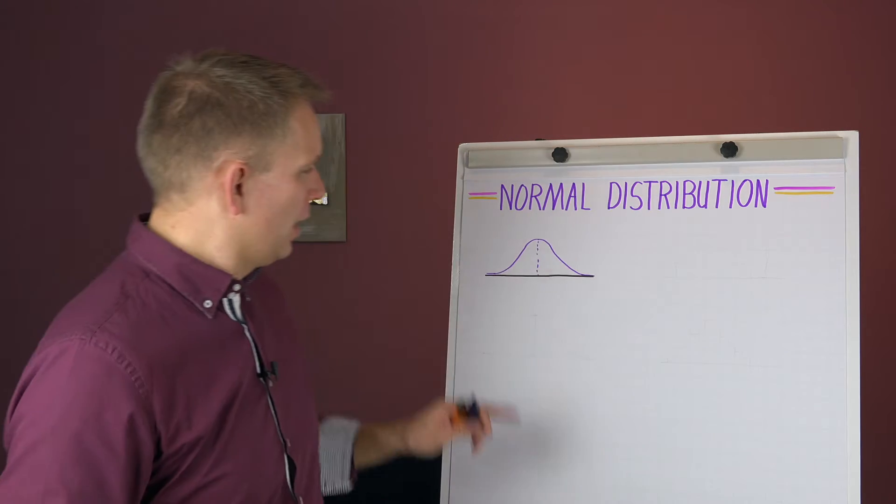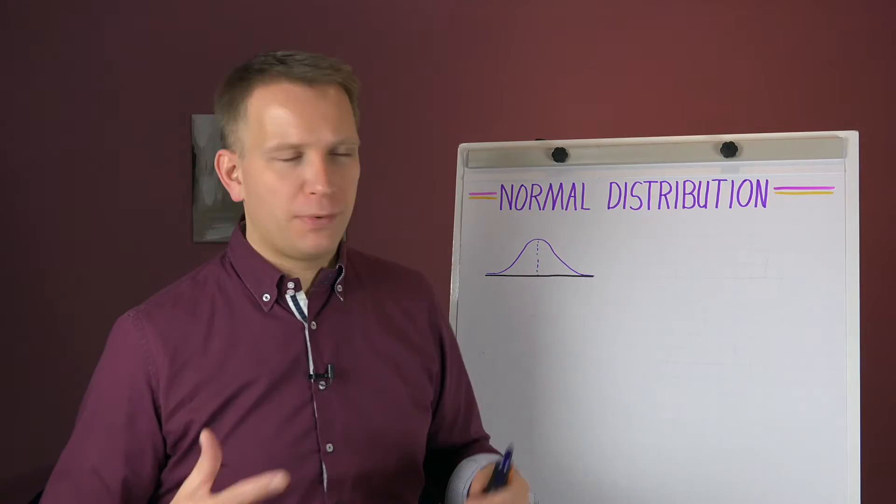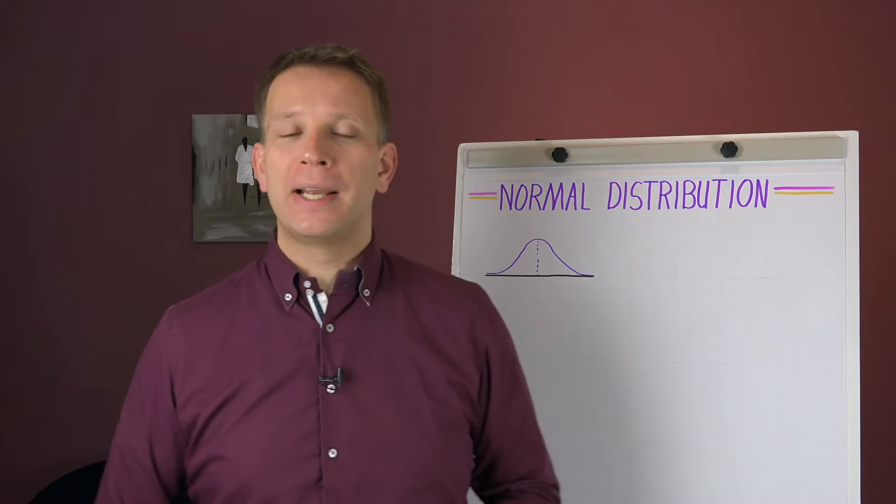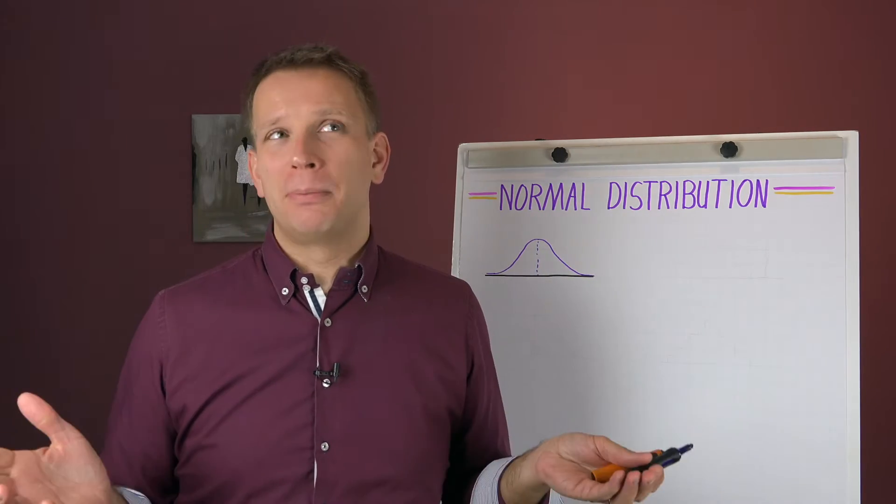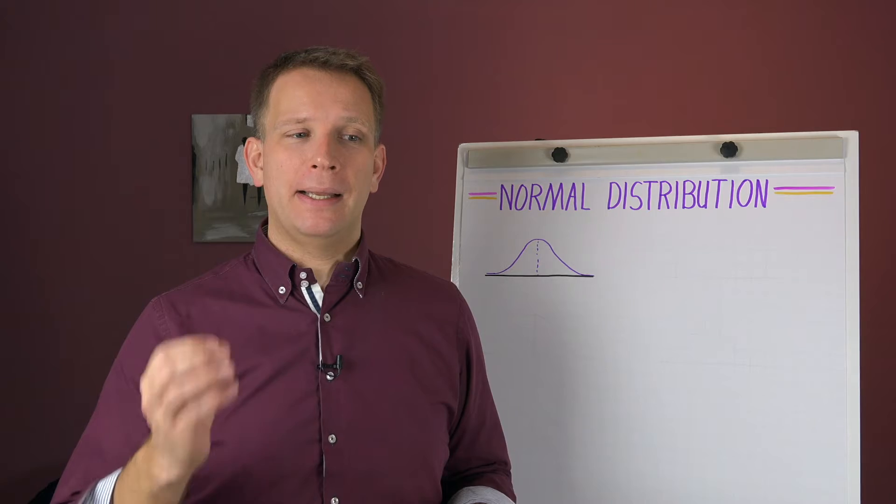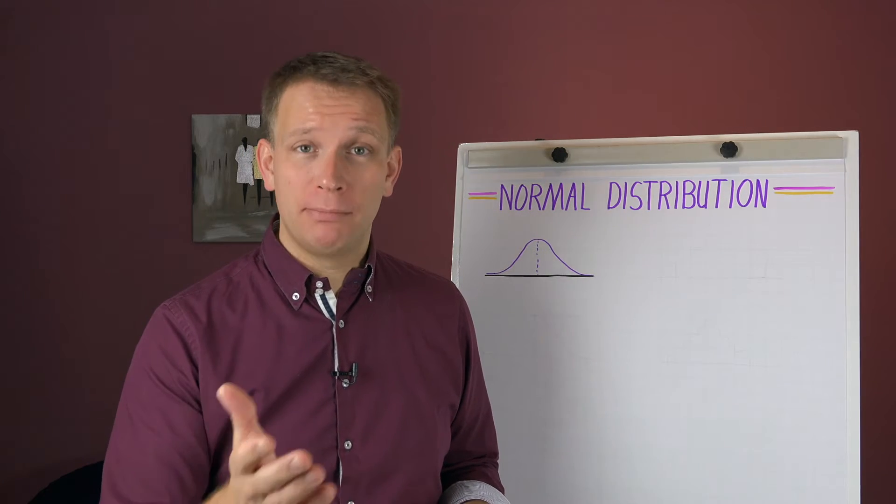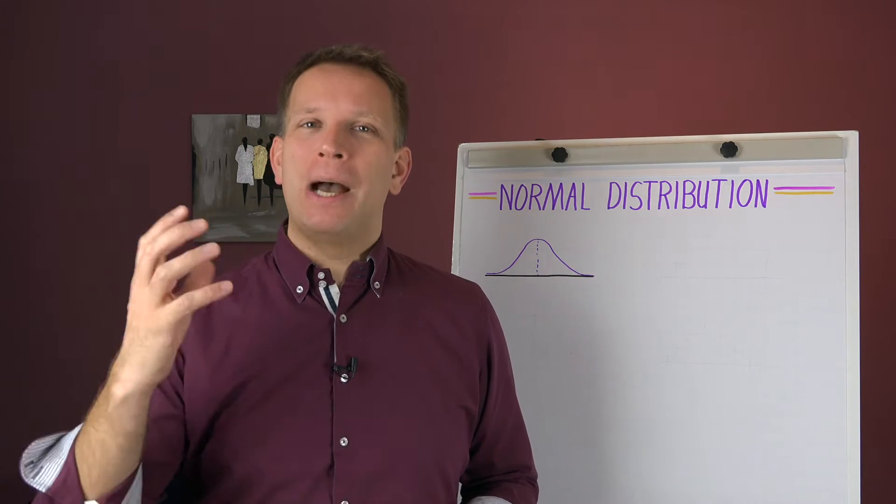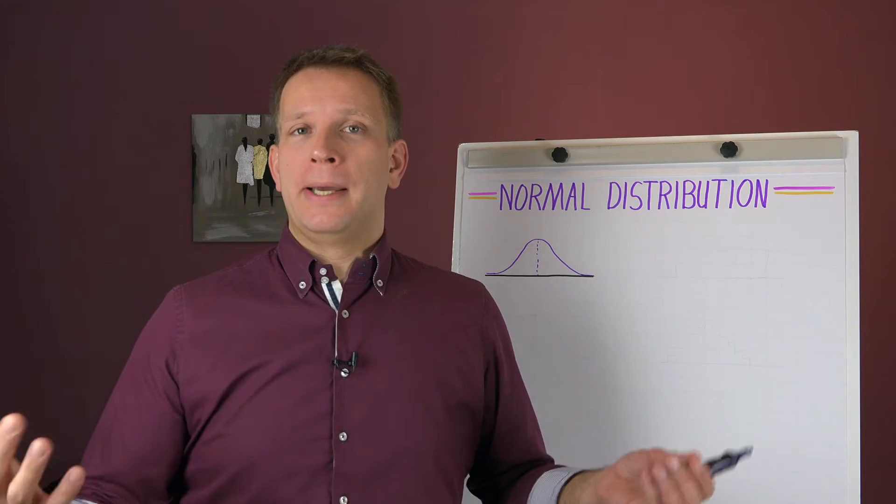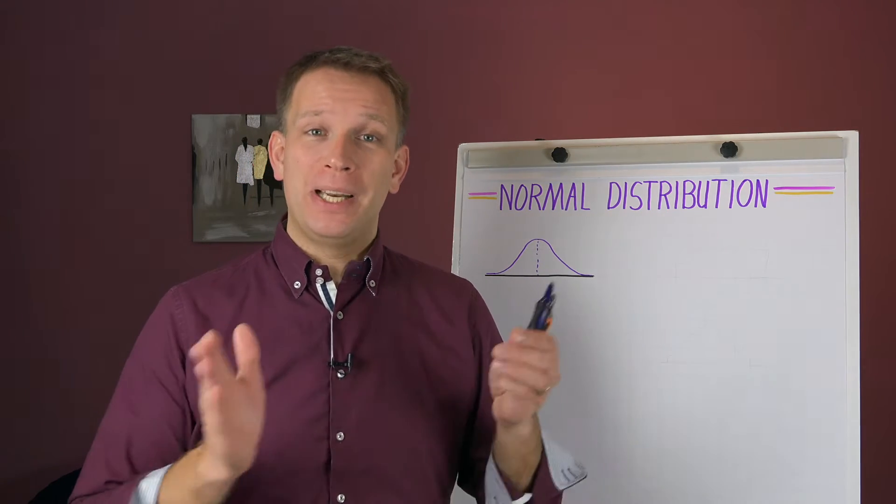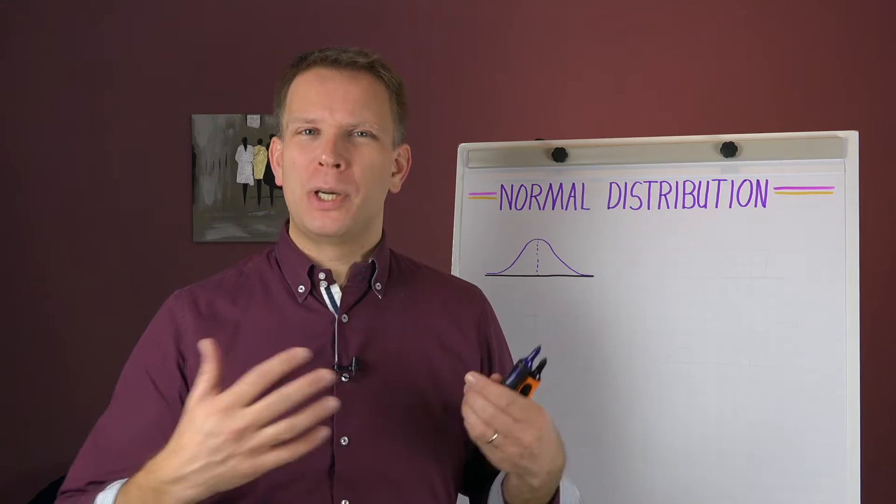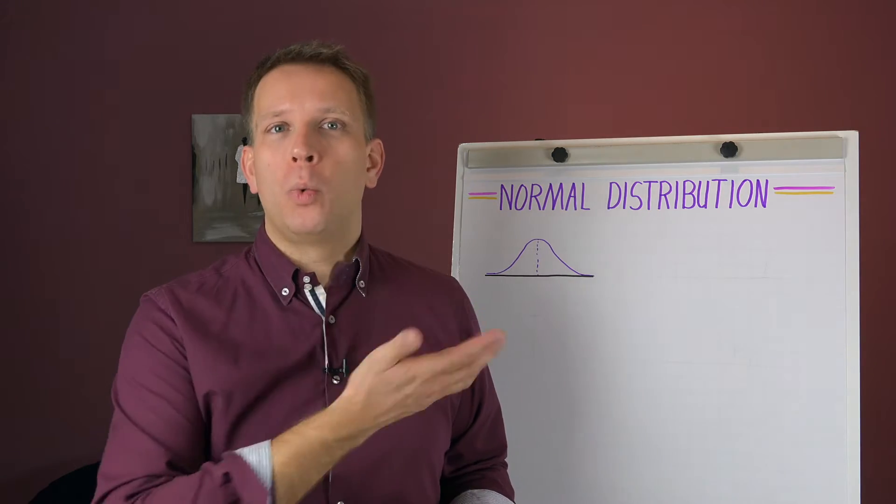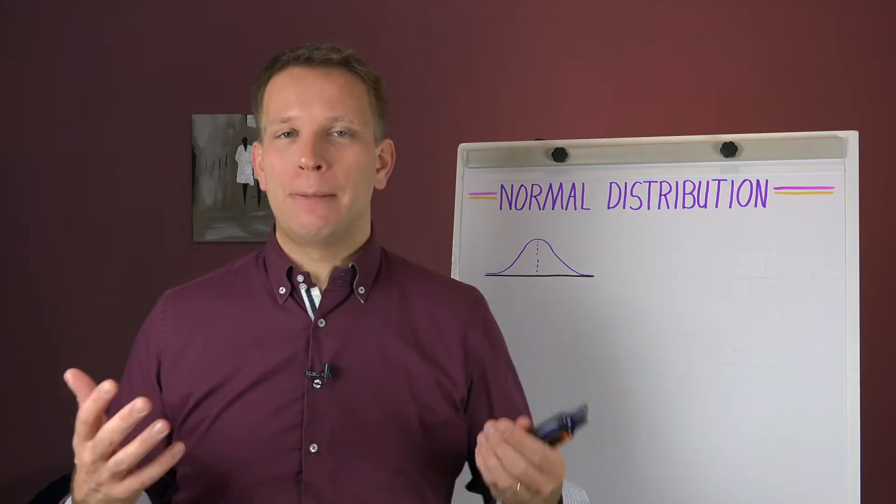So often we draw this bell curve, Gauss curve, normal distribution thing, and we just expect people to know what it is. And probably you've seen it a lot, especially if you're following this channel. But just to be sure, I wanted to also share with you what is it? And perhaps this is also a good video that you can share with other people when you want to explain to them what is this picture? What does it mean?